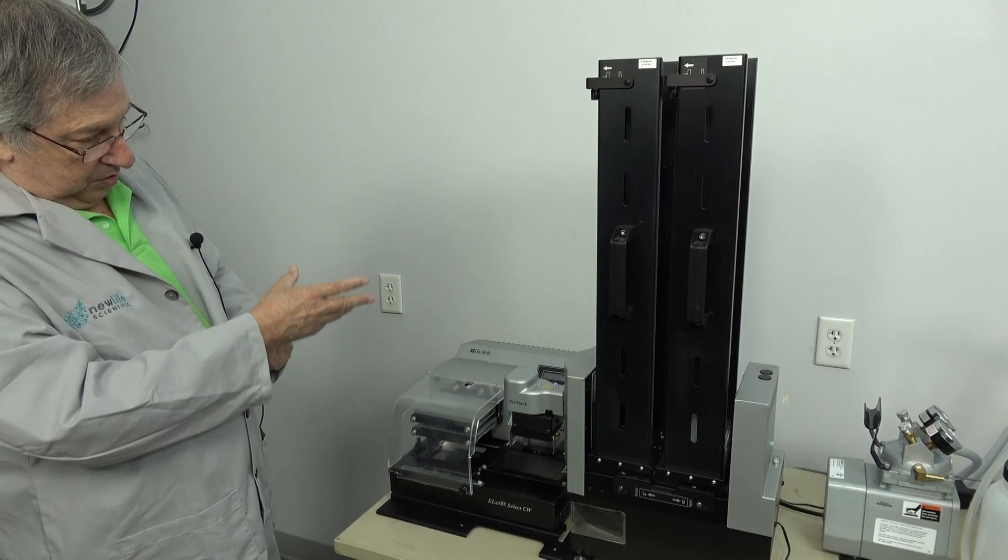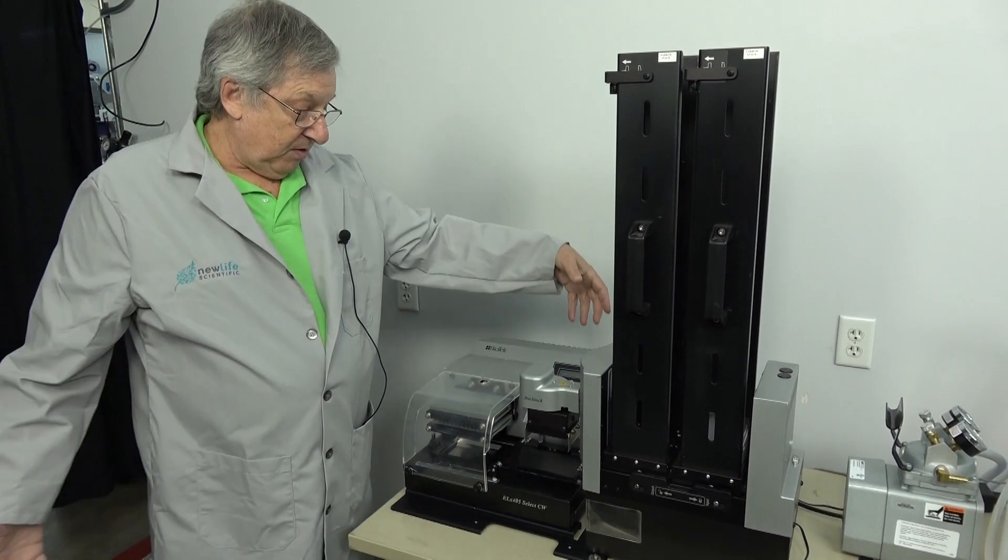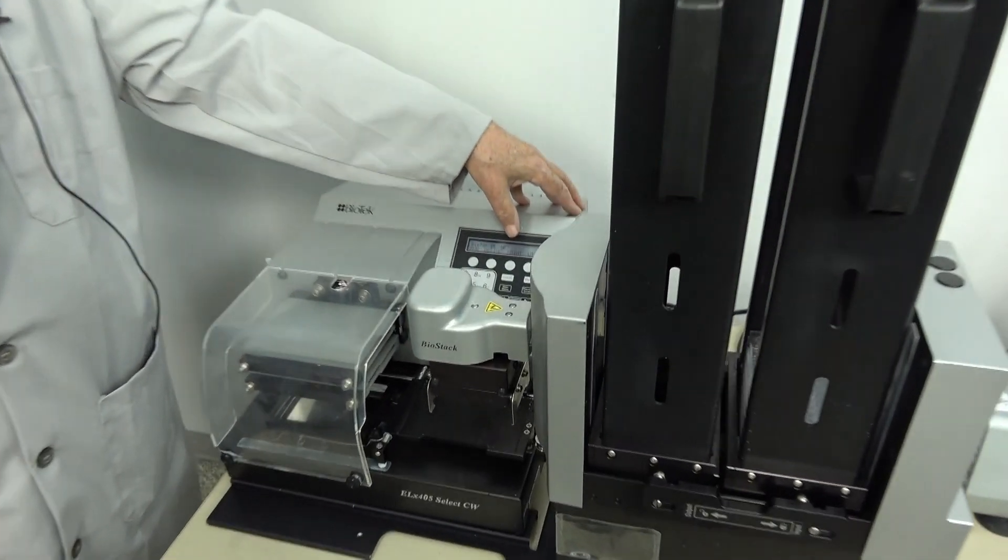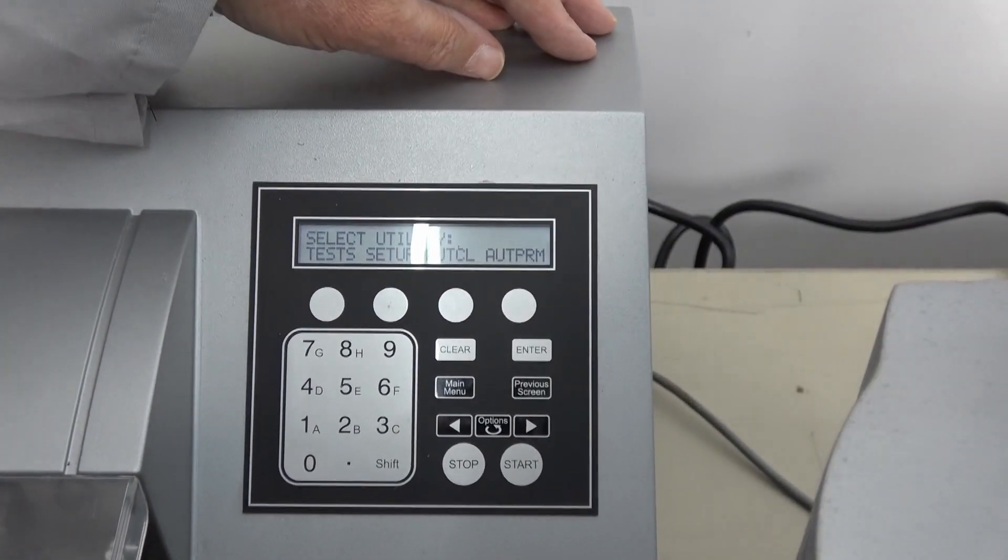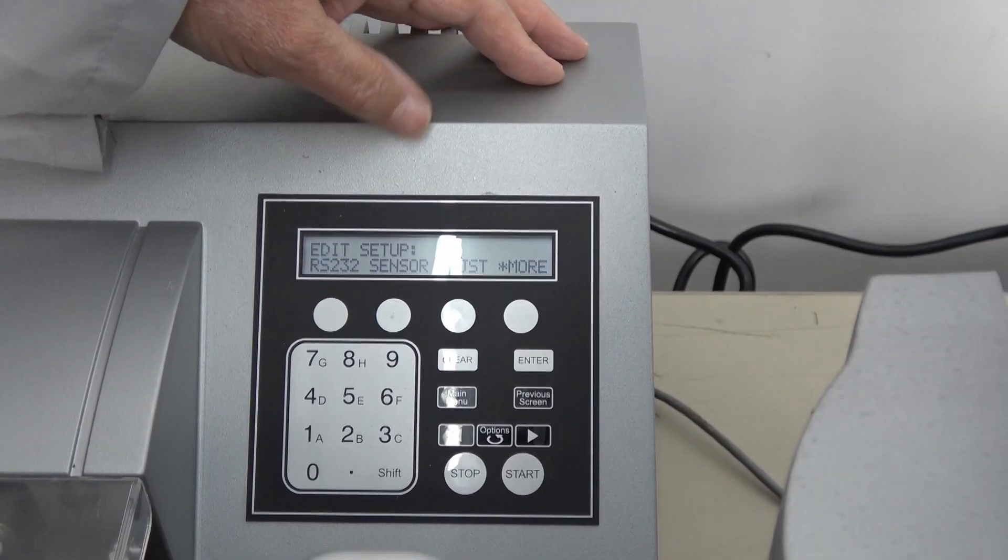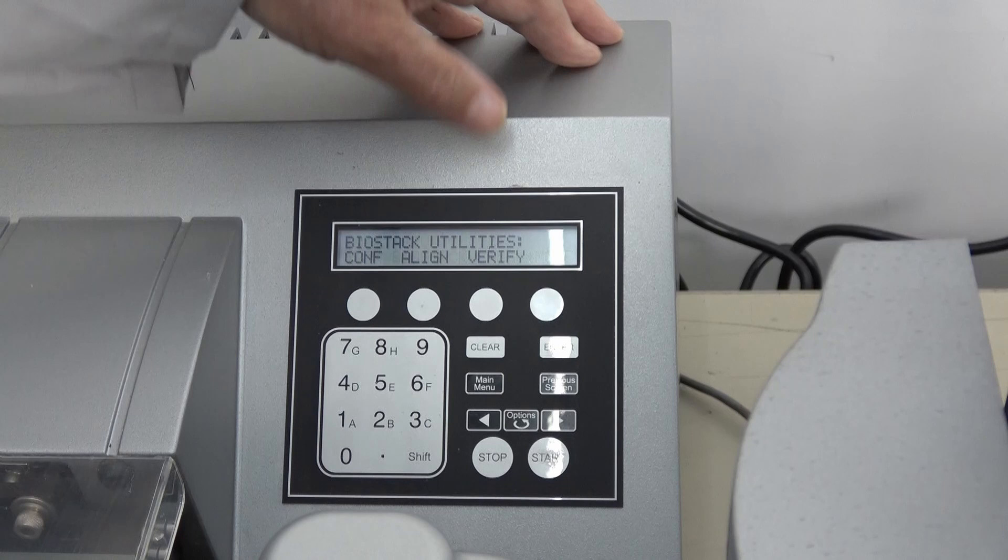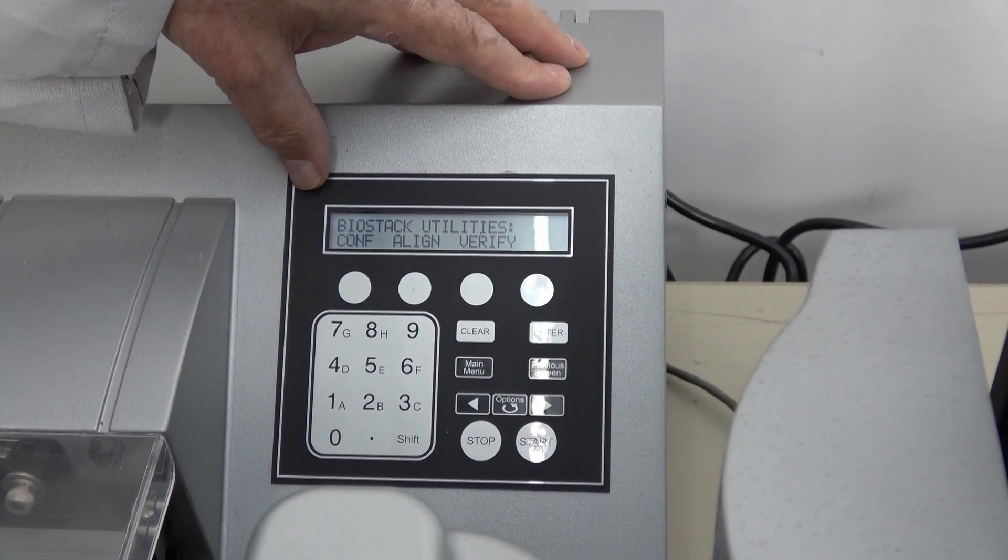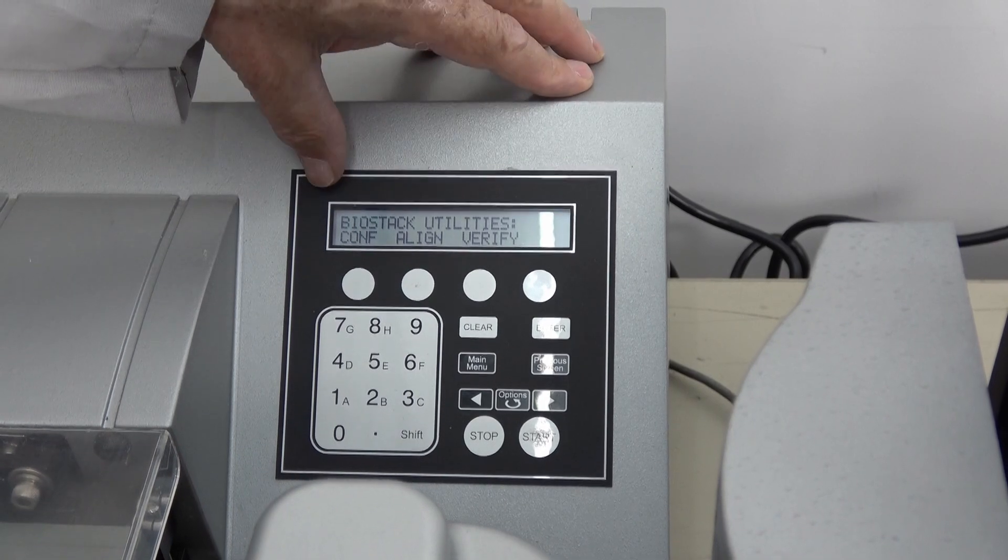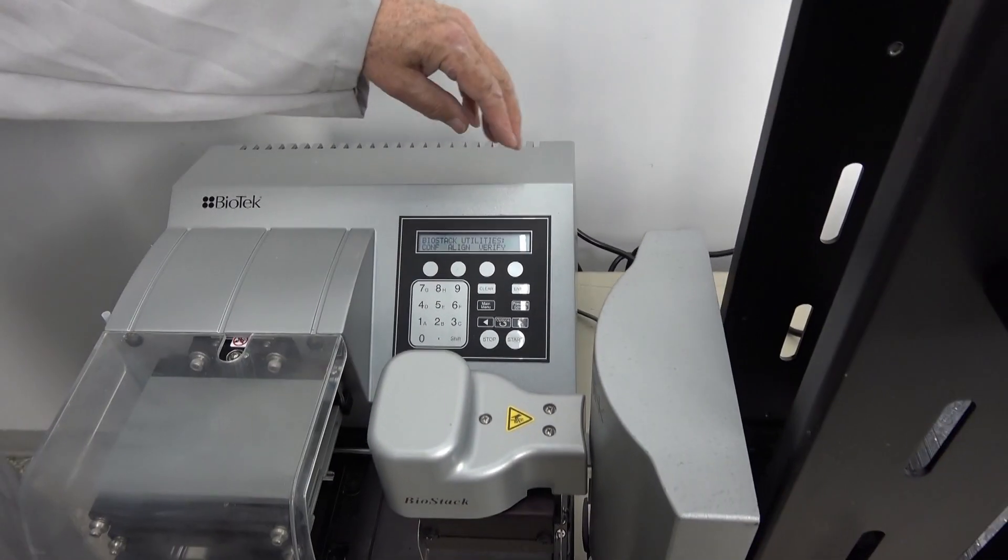There's software built into the system to help you align that. It's very easy to run. It is somewhat forgiving. That's a utility menu. Setup, more, BioStack. Those are your different things that are in that align. You can either configure it, align, or verify it. Just make sure that it sees it.